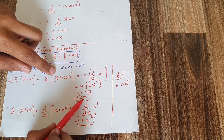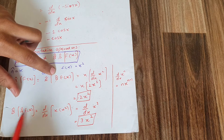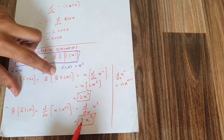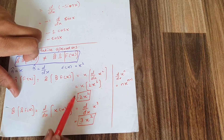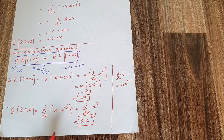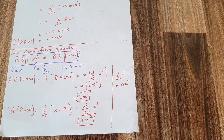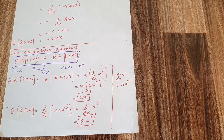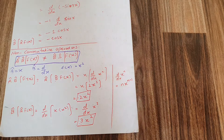When B was applied first, the answer was 2x², and when A was applied first and B was applied later, the answer was 3x². Since the answers are not the same, these operators are non-commutative operators. This was all about the algebra of operators.